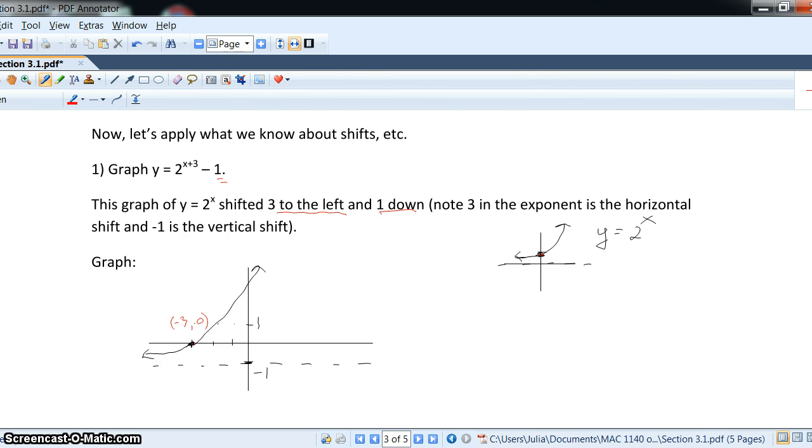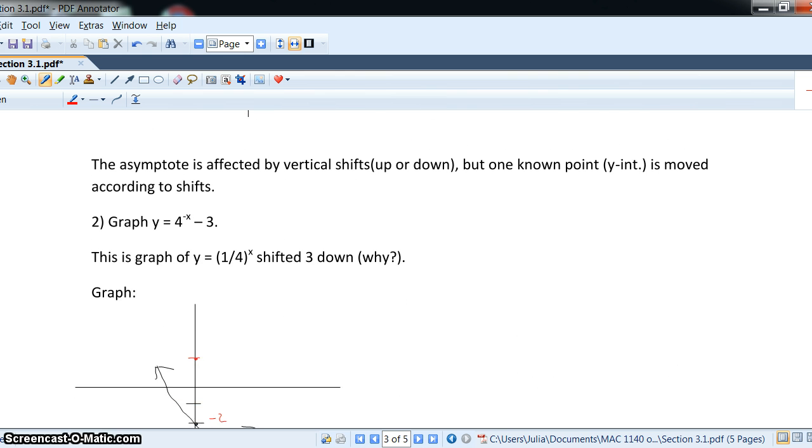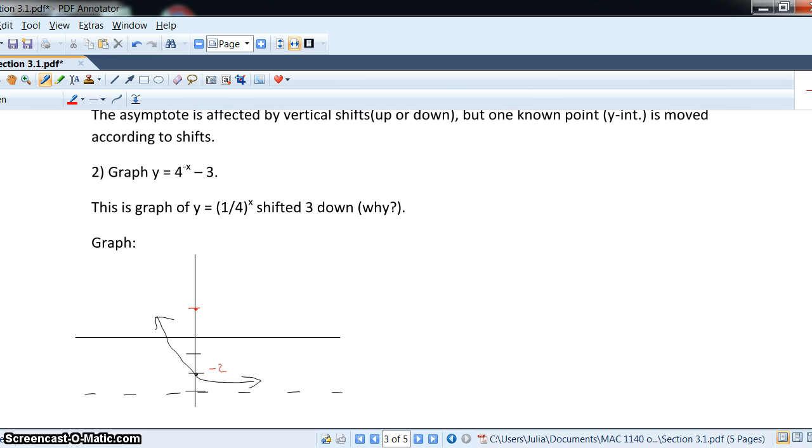So, let's take a look at another example. y equals 4 to the negative x minus 3. If we recall that negative exponent means 1 fourth to the power of x, the shift is 3 units down, because it's outside of the function.